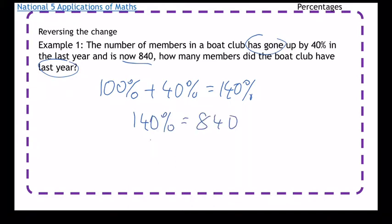What I've then got to do is work out 1% and then work out 100%. So if I know 140% is 840, what I do is divide both sides by 140.